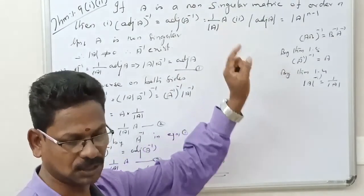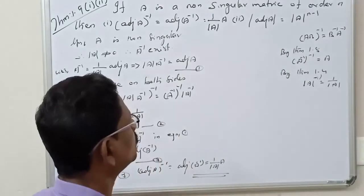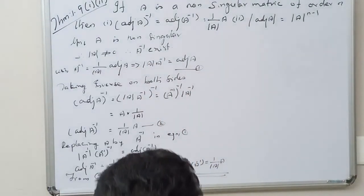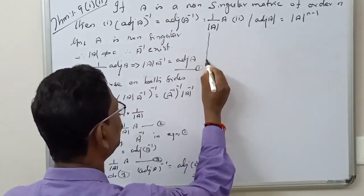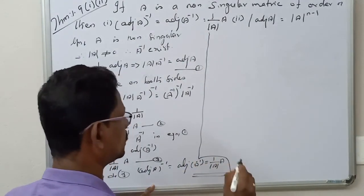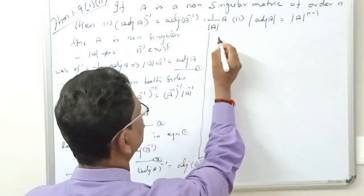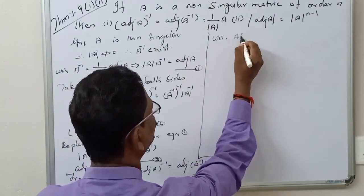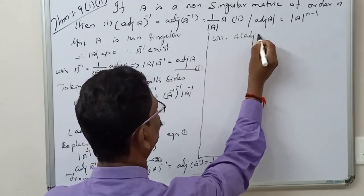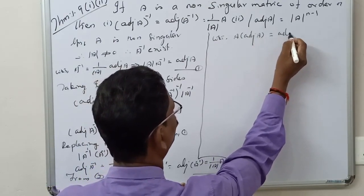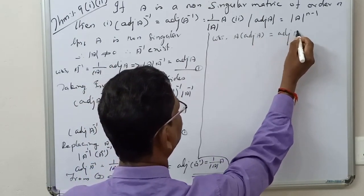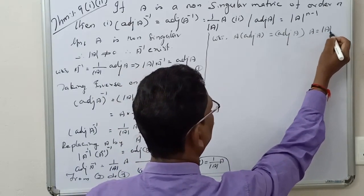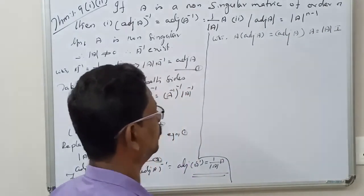Second part: determinant of adjoint of A equals what? For the second part, we already know that A into adjoint of A equals adjoint of A into A equals determinant of A into I.